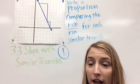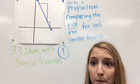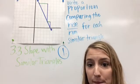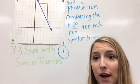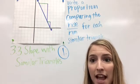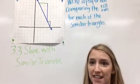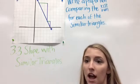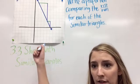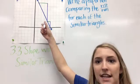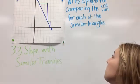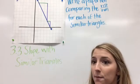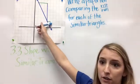This is practice problem number one. Please do this in your composition book with us along with the video. Use your graph paper that we gave to you today during class so that you can graph these two triangles and work the problem out with me. Okay, so here I have this lovely graph and the directions say write a proportion comparing the rise over run for each of the similar triangles. So, I've got big triangle, small triangle.